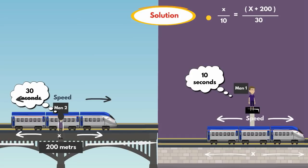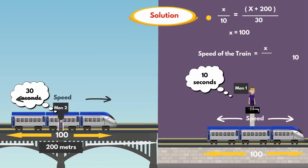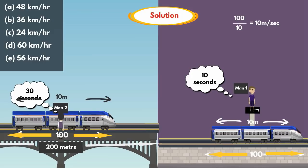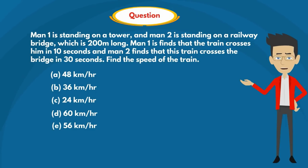After solving this, we get x = 100. Therefore, the length of the train is 100 meters. Speed of the train equals x divided by 10, that is 100/10 = 10 meters per second. The options are given in kilometers per hour, so we multiply by 18/5 to convert: 10 × 18/5 = 36 kilometers per hour. So the answer is Option B: 36 kilometers per hour.